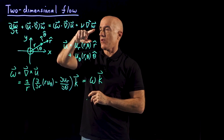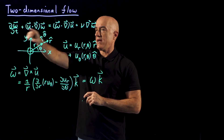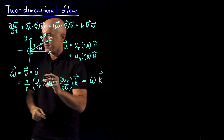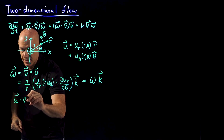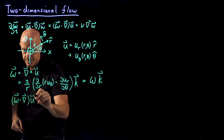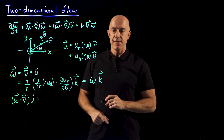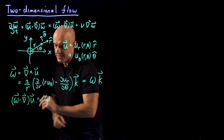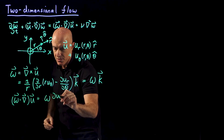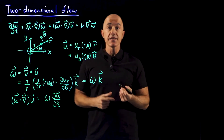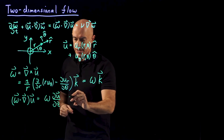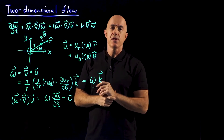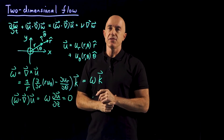Looking at the full vorticity equation and how it simplifies in two dimensions: the vortex stretching term, omega dot del u, becomes the scalar vorticity omega times du/dz because the vorticity field has only a single component in the z direction. But the velocity field is independent of the z coordinate, so this term is strictly zero. This term, which is so crucial for turbulence, is zero in two-dimensional flow.